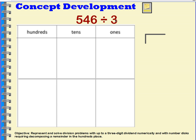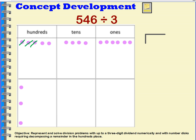Let's take a look at five hundred forty-six divided by three. I'll work this the same way — first representing five hundred forty-six on the place value chart: five hundreds, four tens, and six ones. I need to divide that into three groups, so I'll draw a line through three of the hundreds and move them into the groups. That leaves me with two hundreds and three groups, so I'm not going to be able to put these hundreds into my groups as-is.